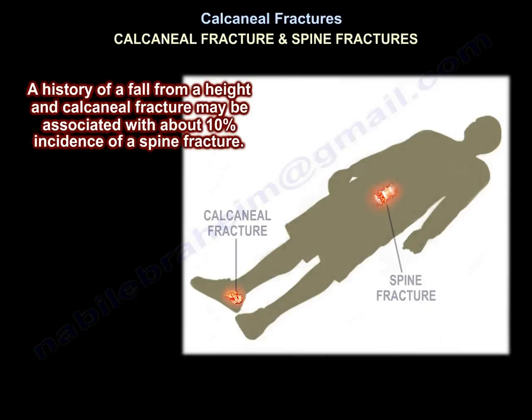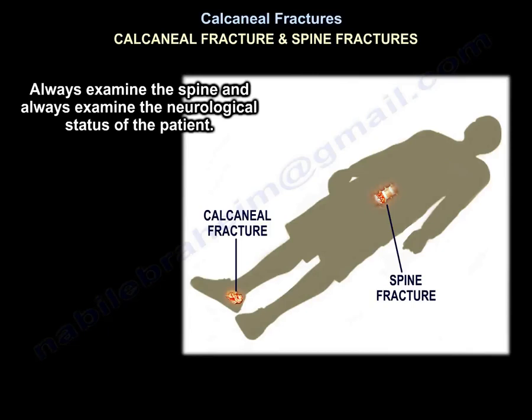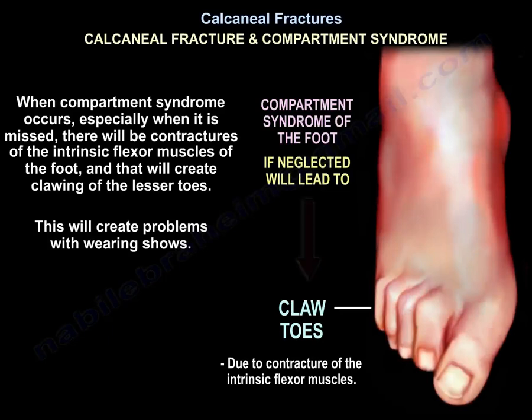Spine fractures: a history of a fall from height with calcaneal fracture may be associated with about a 10% incidence of a spine fracture. Always examine the spine and the neurological status of the patient. Compartment syndrome: when it happens — especially if missed — there will be contractures of the intrinsic flexor muscles of the foot, creating clawing of the lesser toes.